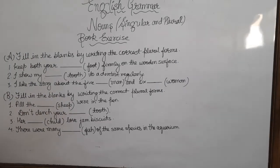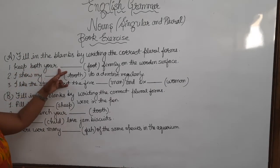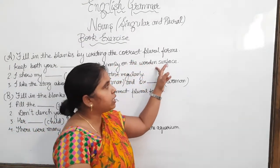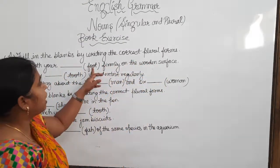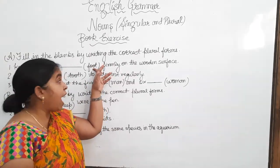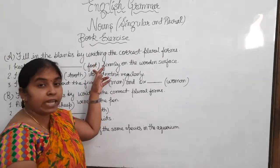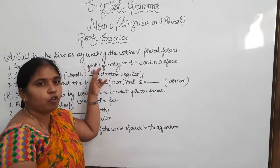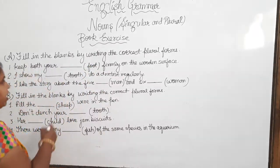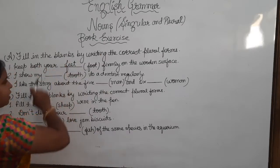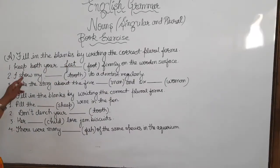The first sentence of the exercise is A: 'Keep both your dash firmly on the wooden surface.' In the bracket, the noun is 'foot.' Foot is a singular noun, so the plural of foot is 'feet' — F-E-E-T. That will come here in the blank.